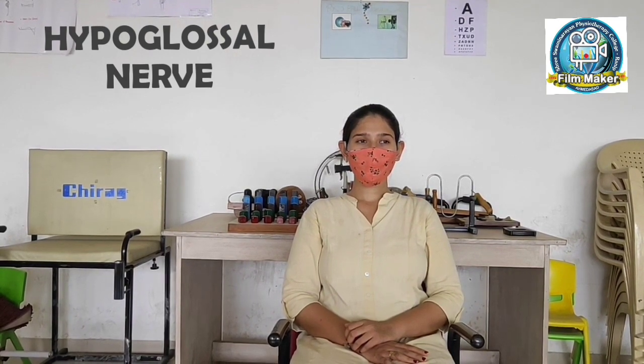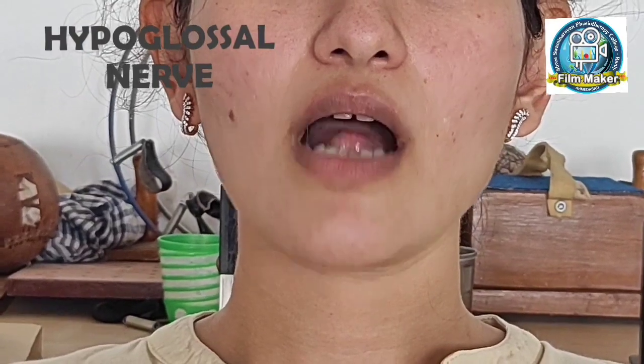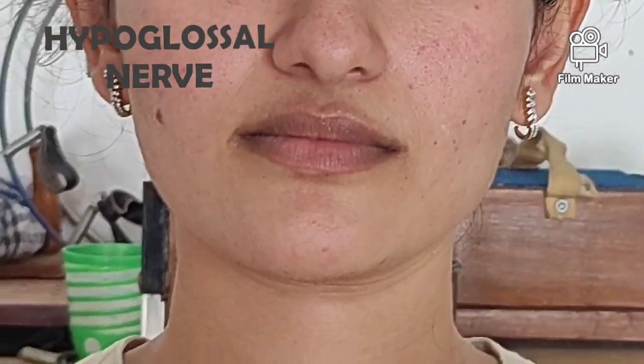Next is the 12th cranial nerve, that is the hypoglossal nerve. The 12th cranial nerve innervates the tongue muscles and is responsible for voluntary tongue movements. Ask the patient to open the mouth and inspect the tongue, looking for evidence of atrophy and fibrillation. Then ask the patient to protrude the tongue and note any difficulty or deviation. A protruded tongue deviates towards the side of weakness.